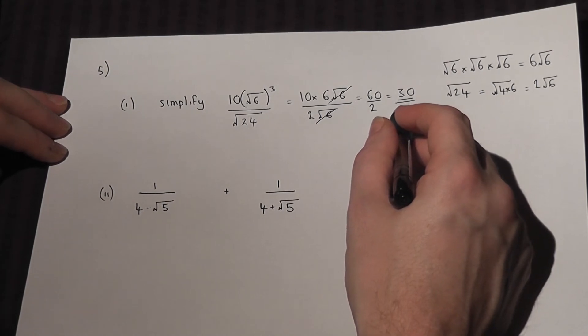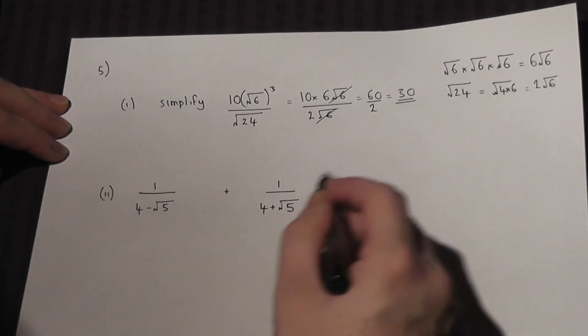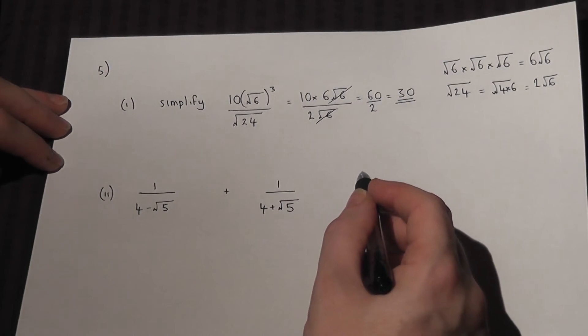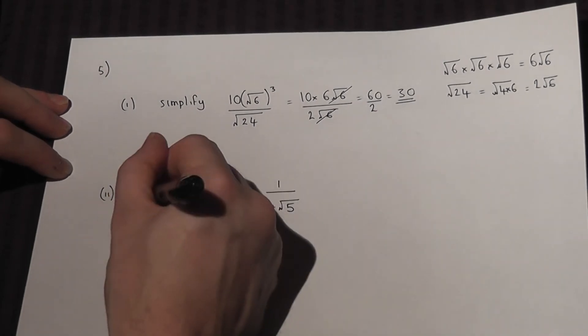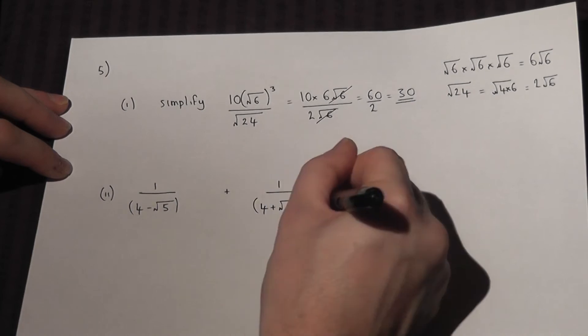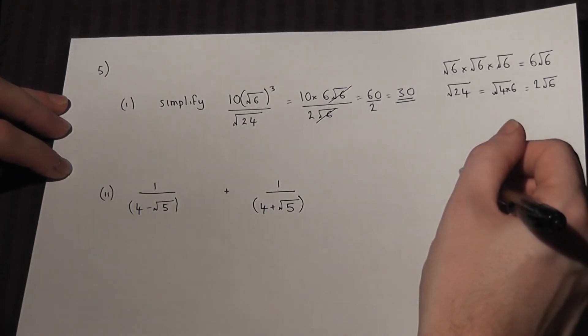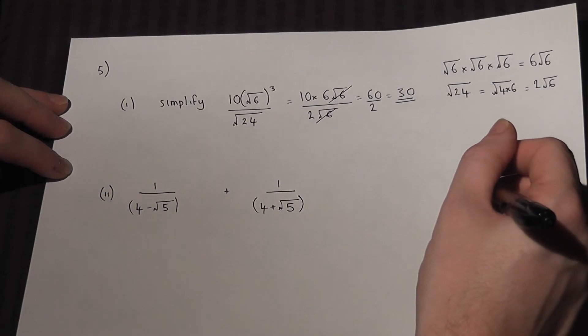Now the second part asks us to add together two fractions involving surds. Now the method, as always, is to put brackets around the fractions. We then want them to share the same denominator.